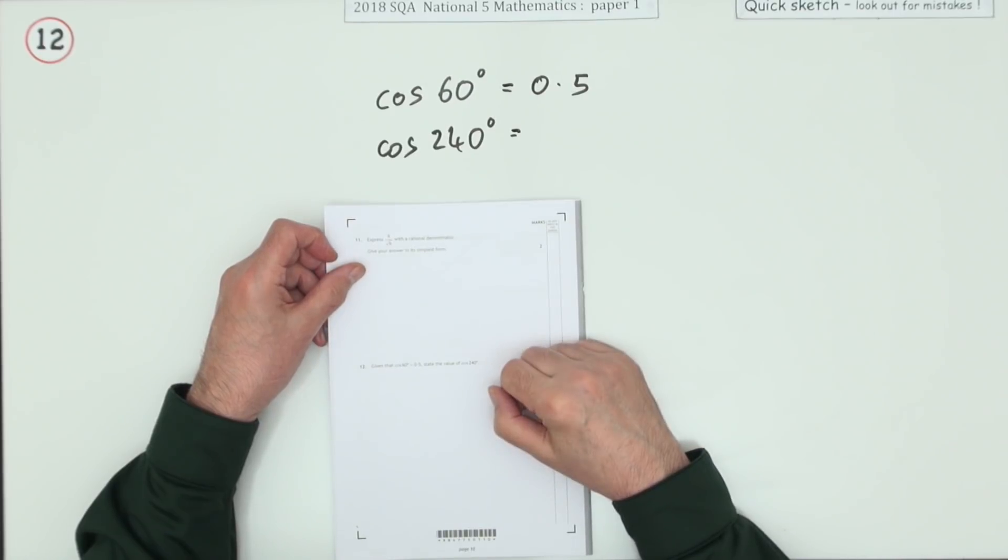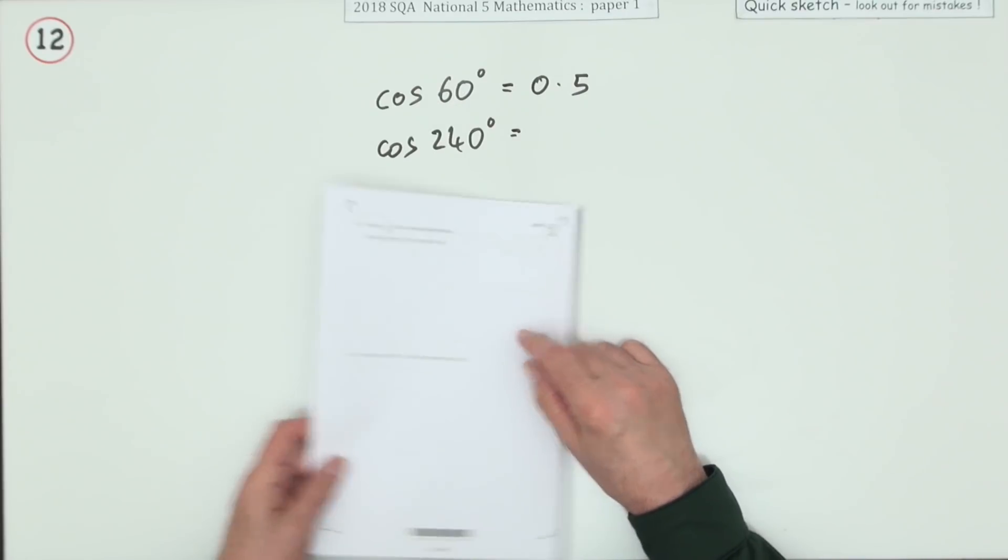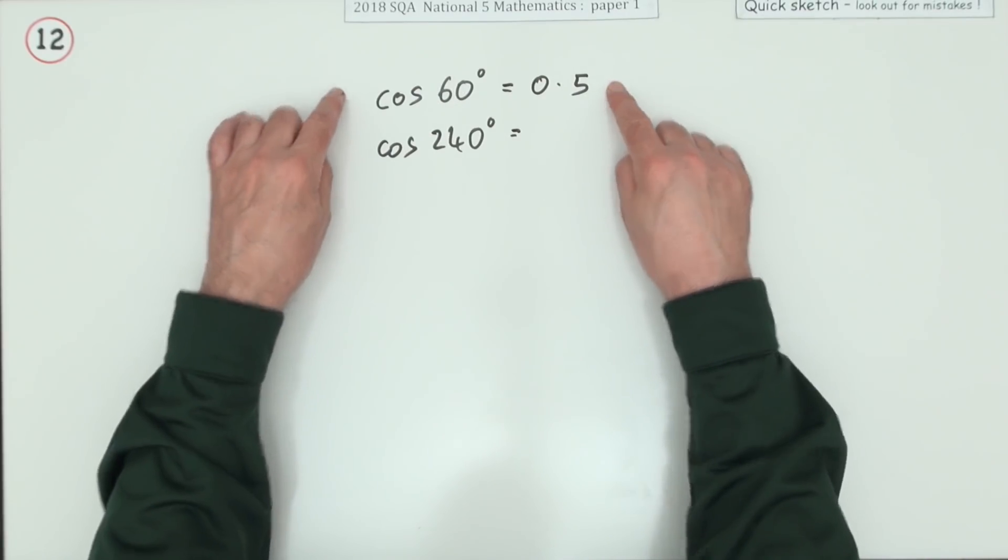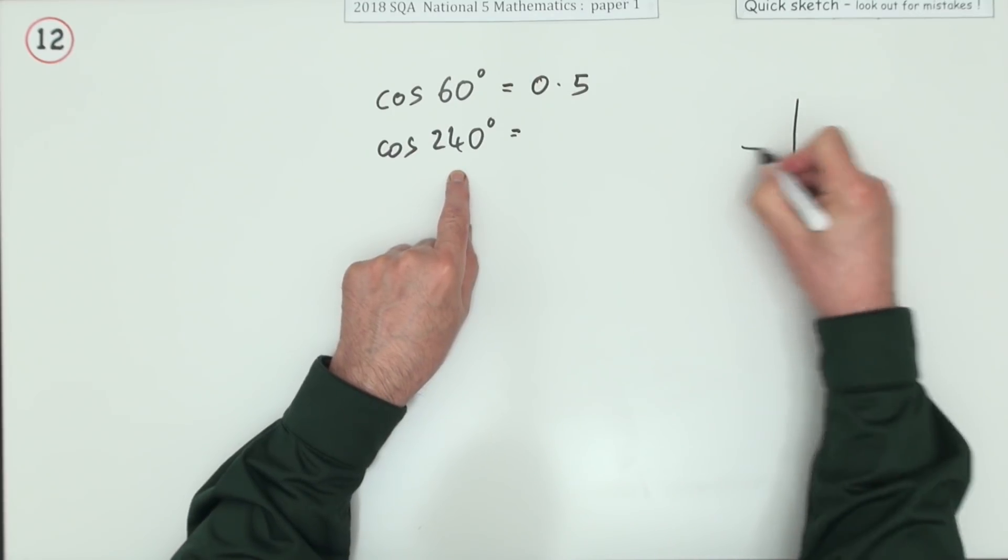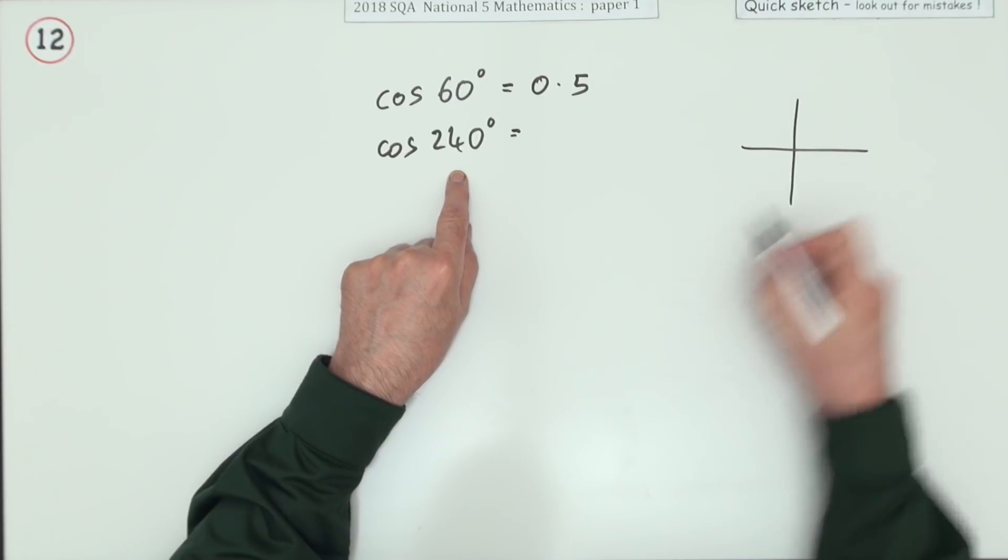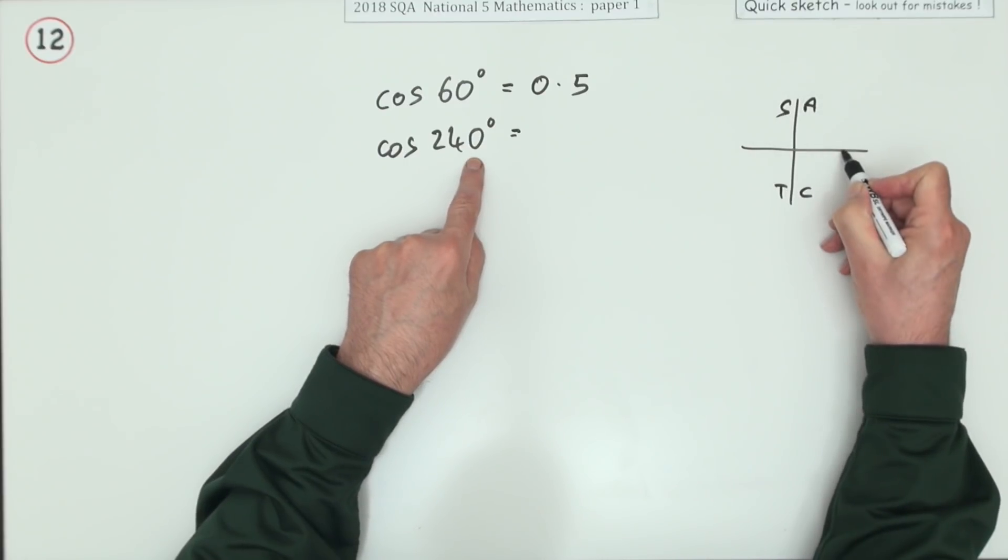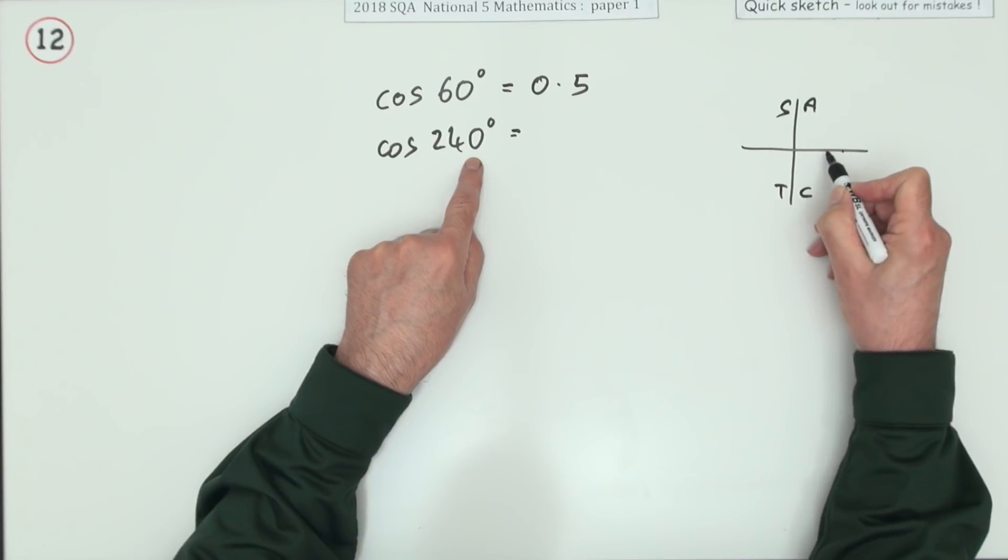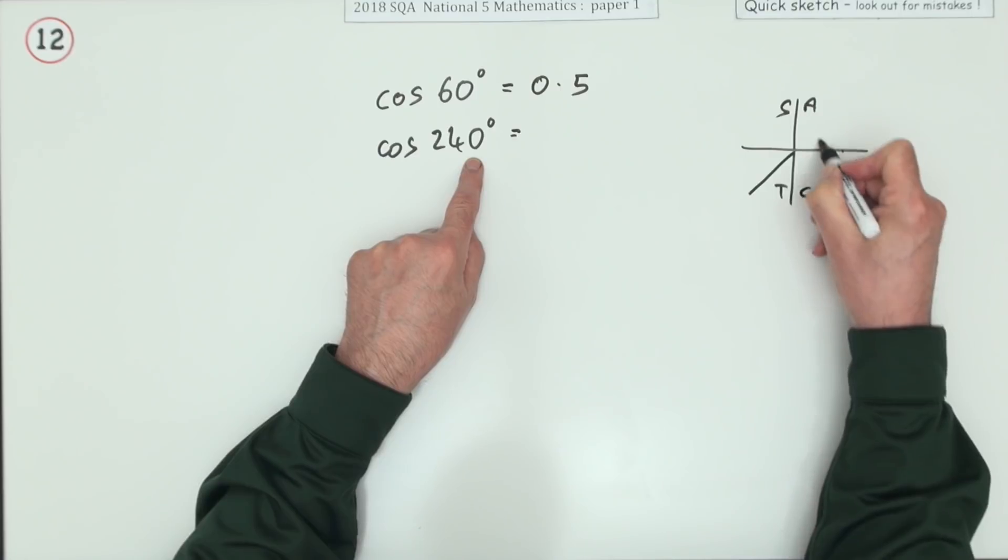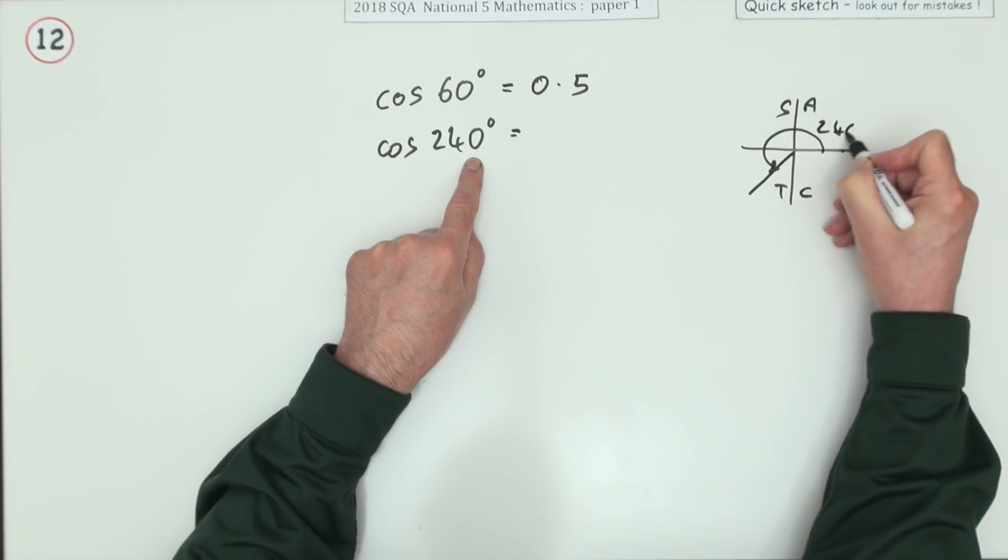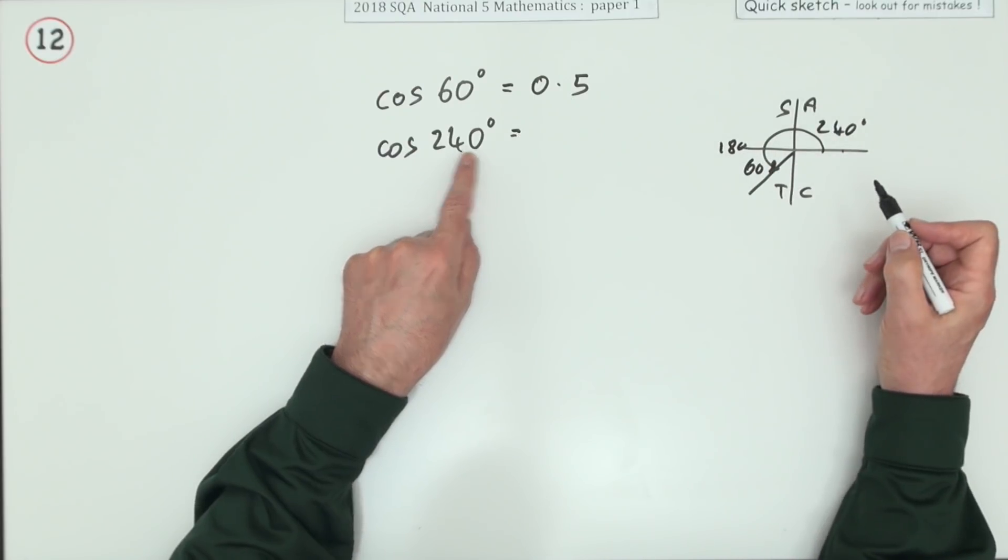Number 12, just for one mark. Given that cos 60 is 0.5, state the value of cos 240. You can probably guess it's either going to be 0.5 or negative 0.5. The way you'll check that is locate—think of the graph if you want—locate 240 degrees in your CAST diagram: all, sine, tan, cos. That's measured from this positive axis anticlockwise. So if you go around 240 degrees, that's 90, 180—that's 270, it's not as far as that. You'd end up here. If that's 240 degrees, you've gone beyond 180 by 60.